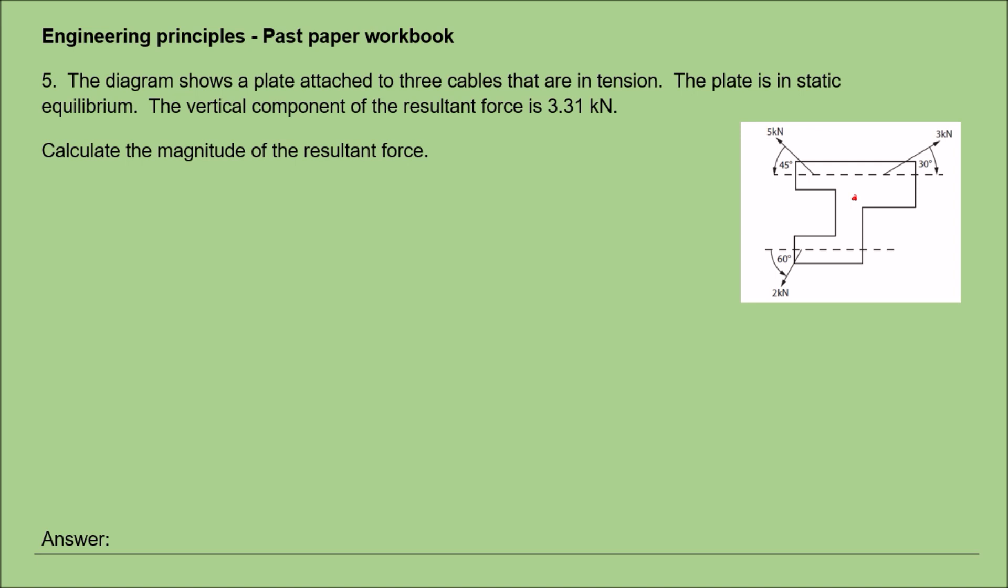It's in static equilibrium, which means it's not moving. We've got forces pushing in different directions. The question asks us to calculate the resultant force—taking all forces acting on this object and combining them into one single number. We're told the vertical component is given in the question, so we're only concerned with what's happening horizontally at first, then we'll come back and use that vertical component.